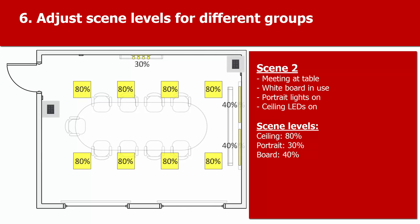Now we can set up scene 2, for when there's a meeting in progress, and people are sitting at the table, with the projector screen up. We'll set all the ceiling LEDs to 80%, and the portrait lights to 30%, and the lights above the whiteboard are at 40%.